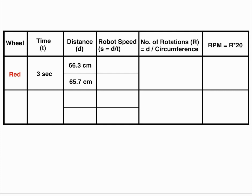Now we know speed is equal to distance upon time. So the robot speed in our case is 22.1 centimeters per second for our first reading and 21.9 centimeters per second for our second reading.